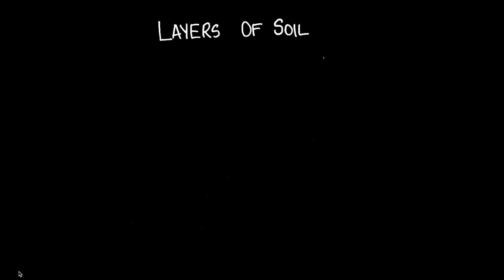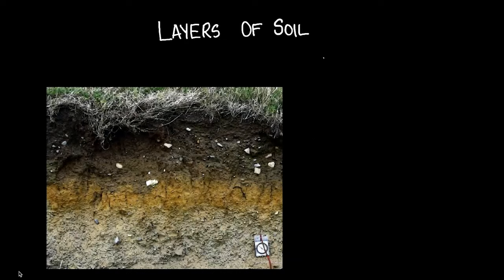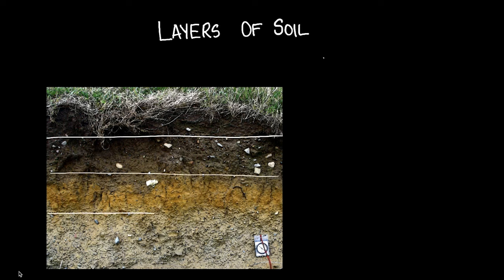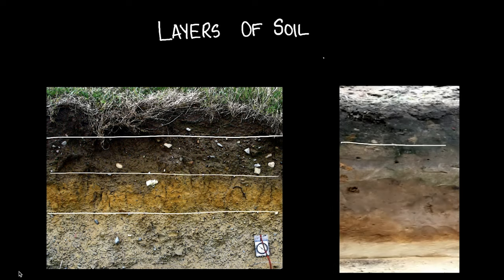What are the layers of soil? If you dug up the earth, you'd most probably find different layers of soil. The demarcations may not be very clear, but you would still find a color difference and a difference of materials as you dig through the earth.